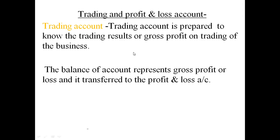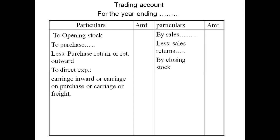Students, moving ahead, we'll be seeing the format of the trading account. Carefully look at this slide. The very first thing you will see is that it is written: 'Trading Account for the year ended' — it can either be 31st December or 31st March. You will see particulars and amount — two sides are there. This is our debit side and this is our credit side.